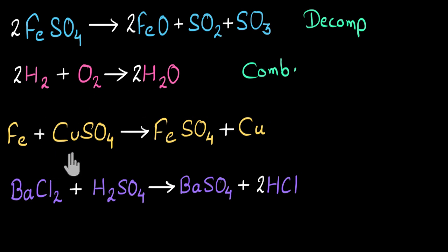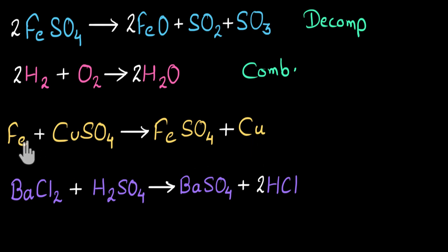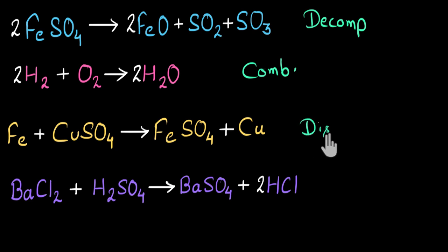In the third reaction, I have iron and copper sulfate on the reactant side, and on the product side I'm getting iron sulfate and copper. Iron was alone previously and copper was in its sulfate form, but later iron is taking the place of copper and forming the sulfate, and copper is left alone. Iron is displacing copper from its sulfate and forming iron sulfate. These kinds of reactions are called displacement reactions, where a more reactive element displaces another from its compound.